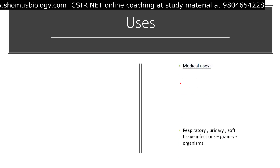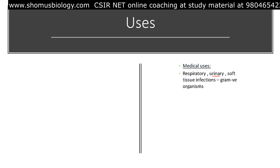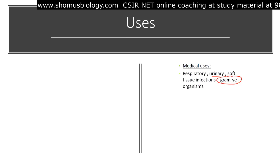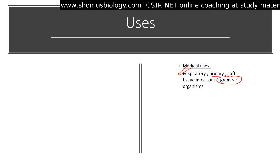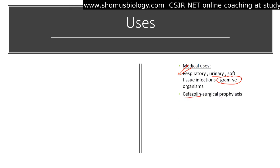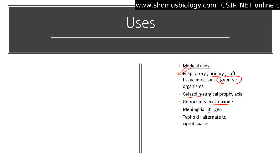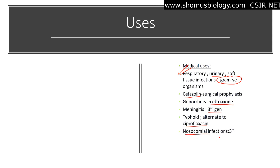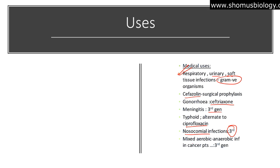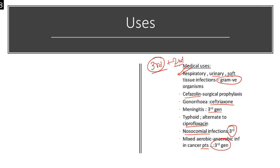Clinical uses include respiratory tract infection, urinary tract infection, and soft tissue infection. Cefazolin is used in surgical prophylaxis, ceftriaxone is used in gonorrhea and meningitis, and third generation cephalosporins are used for typhoid as an alternative to ciprofloxacin. Nosocomial infections and mixed aerobic-anaerobic infections in cancer patients are also treated with third generation cephalosporins. Fourth and fifth generations are reserved for specific infections like Pseudomonas and MRSA.